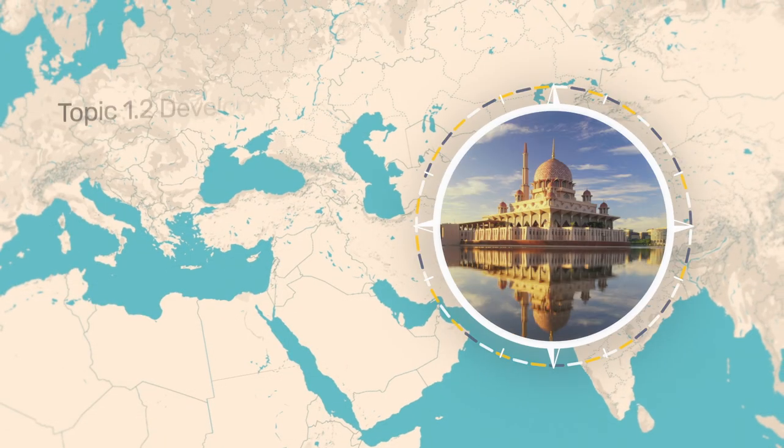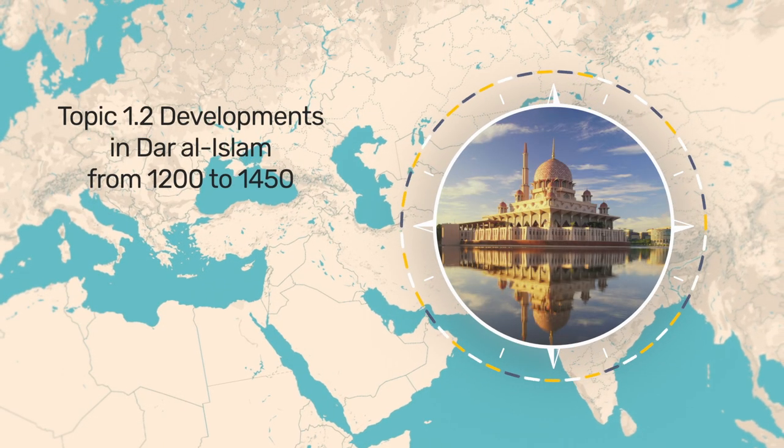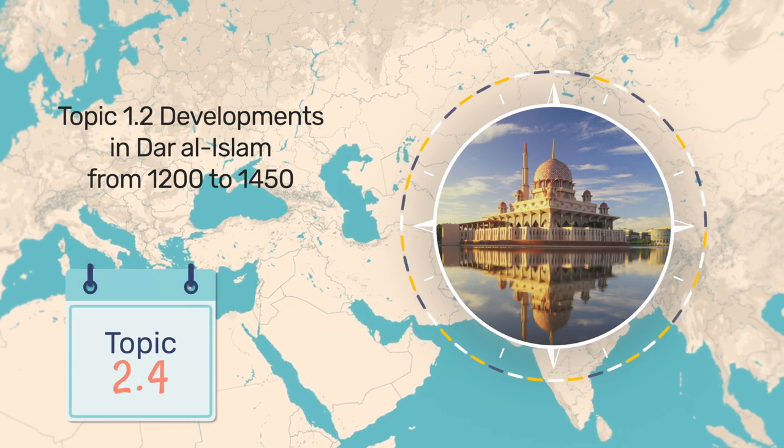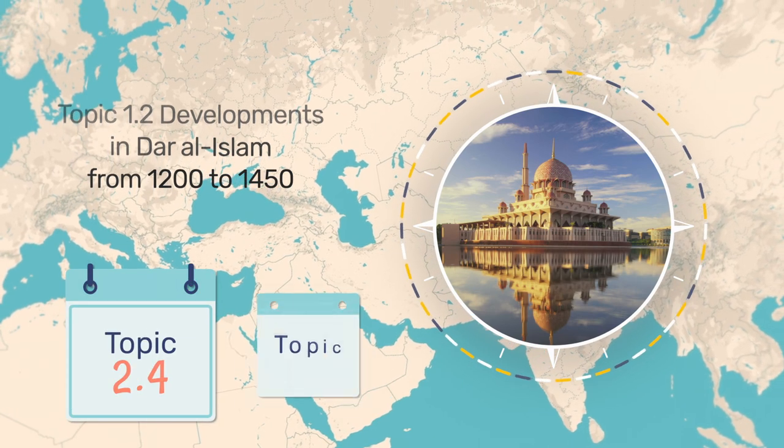We're going to move through the other topics of this time period in the same way. After China, we'll deal with Islam. You remember the two things you learned about Islam in the belief systems video in Unit Zero: Islam is conducive to trade, and it provided the basis for unification of people into large states. So along with topic 1.2 on Islam, we'll also look at trans-Saharan trade routes and state building in Africa — two topics inexorably connected to Islamic civilization.